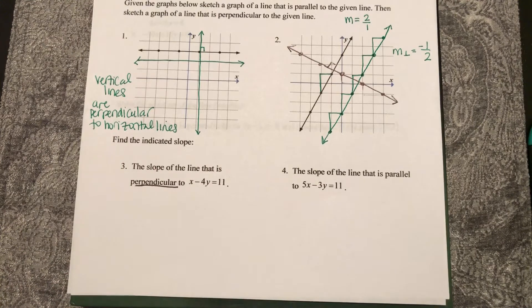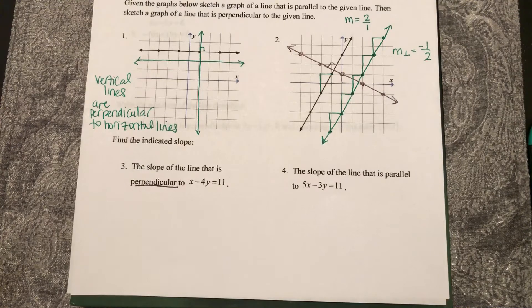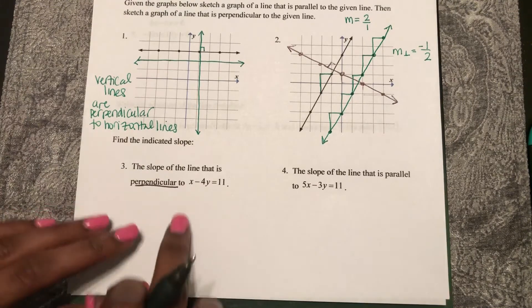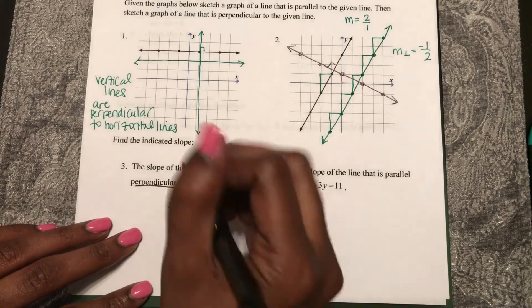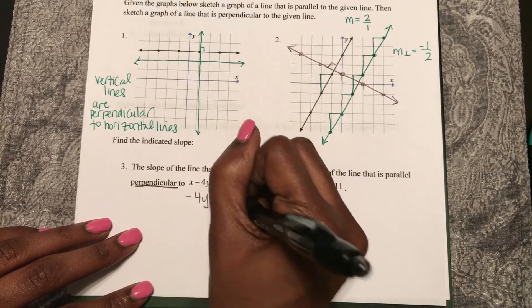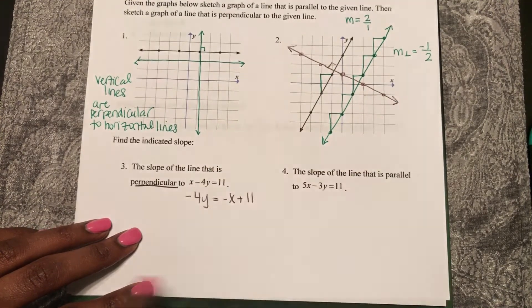In order to find it, I have to convert this line to slope-intercept form. So the first thing I'll do is subtract x to this side. Negative 4y equals negative x plus 11.